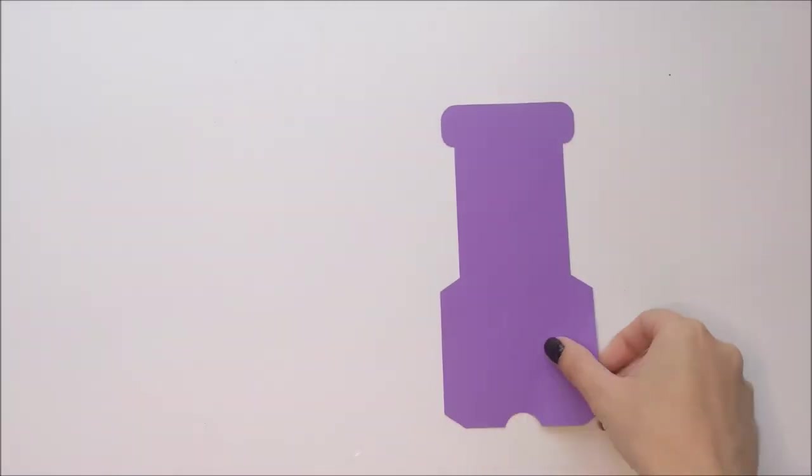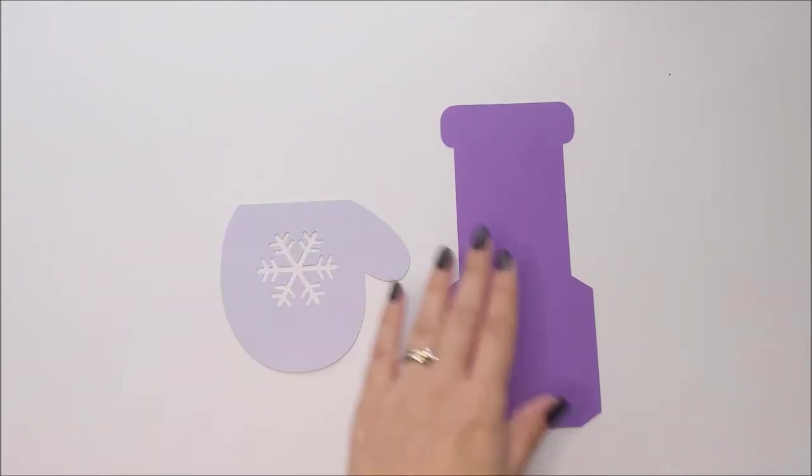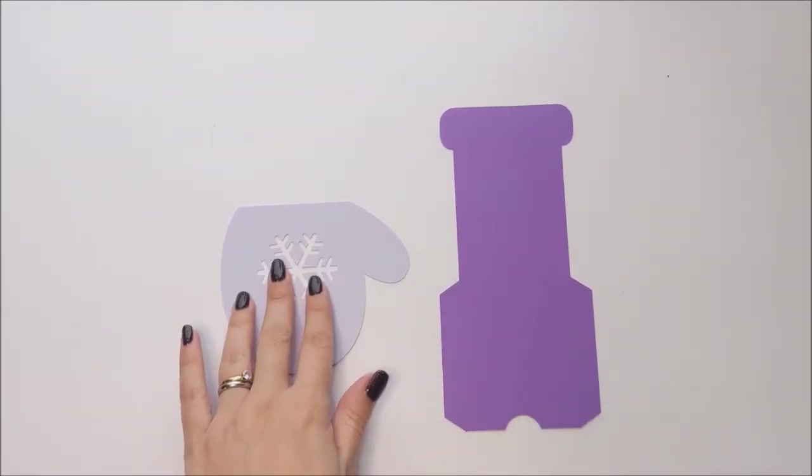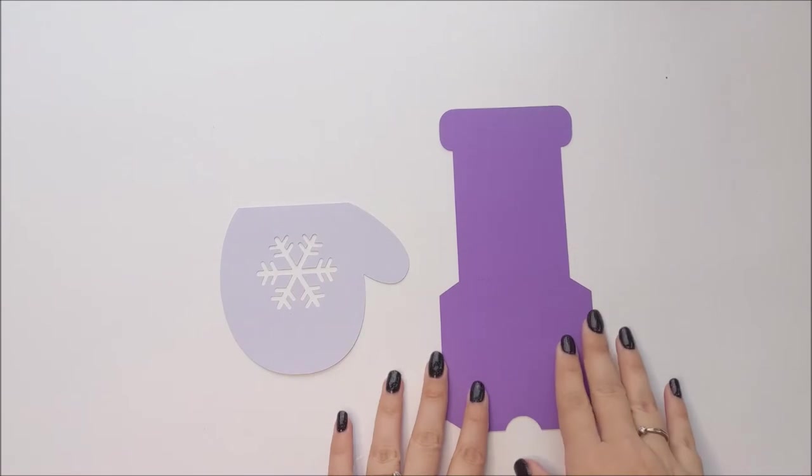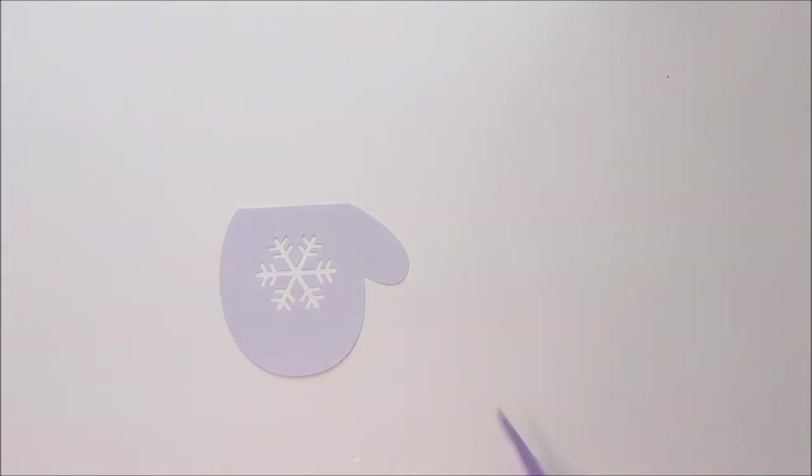You'll start by cutting out both pieces on your cutting machine. There's the gift card holder and the mitten shape. The next thing you're going to do is fold the gift card holder along the score lines.